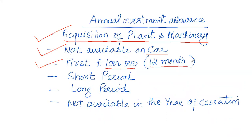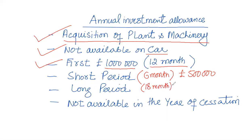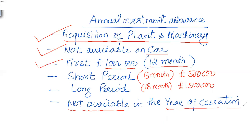If the period is less than or more than 12 months, we have to time apportion. For example, if the period is six months, the limit would be half — that is £500,000. So the first £500,000 of investment would attract Annual Investment Allowance. If the period is 18 months, the AIA limit would be £1.5 million. AIA is available throughout the business, but if you purchase plant and machinery in the last year of business, AIA is not available in that final year.